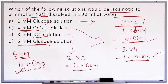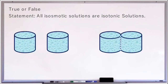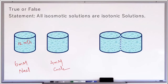True or false: all isosmotic solutions are isotonic solutions. This is false. From the previous example, a 6 millimolar sodium chloride solution and a 4 millimolar calcium chloride solution have similar osmolarity — 12 milliosmoles on both sides — so they are isoosmotic. However, isotonic solutions are solutions where there will be no movement of water between two solutions when separated by a semipermeable membrane.